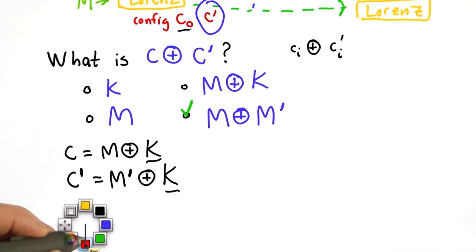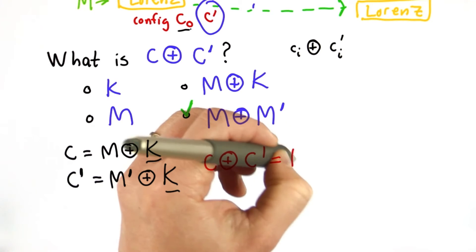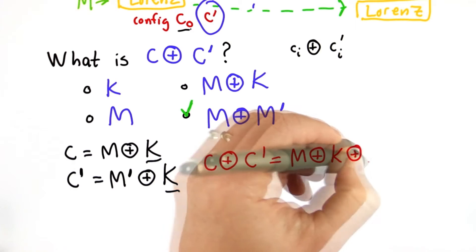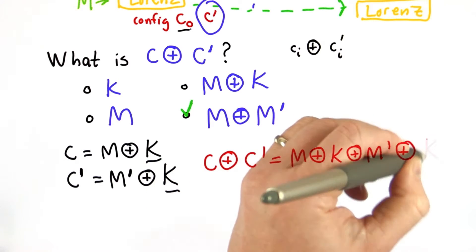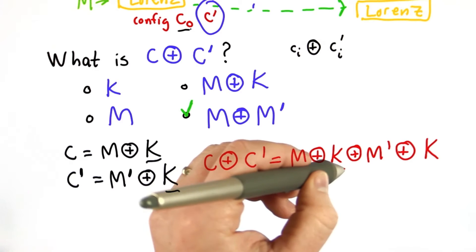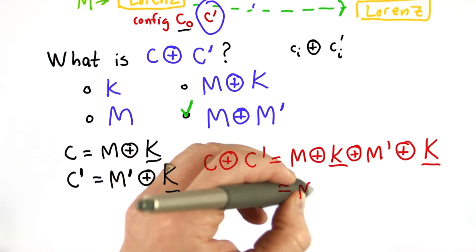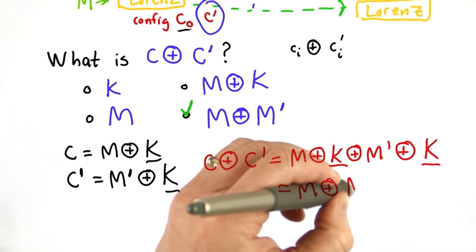So if we xor c and c prime, that's going to be m xor k xor m prime xor k. And the really useful thing that happens if you're trying to break this cipher is these two k's will cancel out. So that's why you end up with m xor m prime.